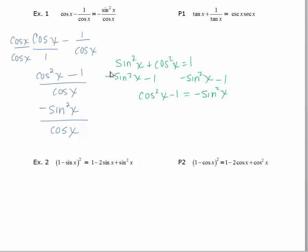So I know that I can substitute the negative sine squared x in for the cosine squared x minus one. And since my goal was to manipulate the left hand side until I reached an expression equivalent or exactly the same as the right hand side, I'm done. Alright, let's try example two and then I'll have you do practice problem one and practice problem two.